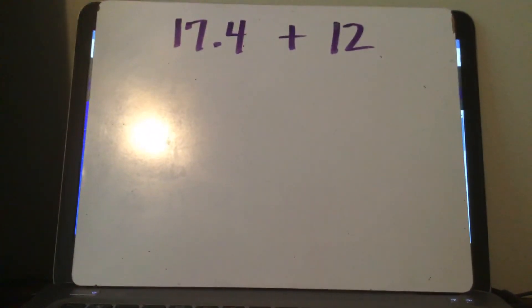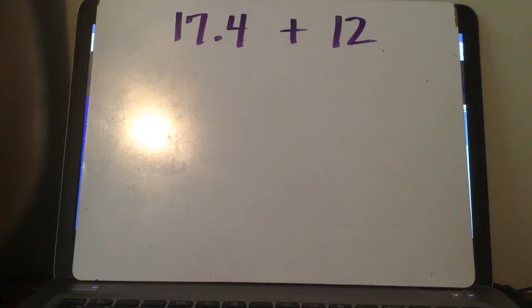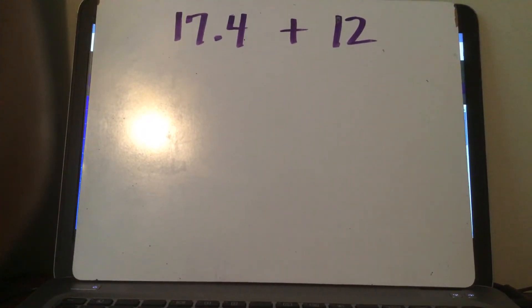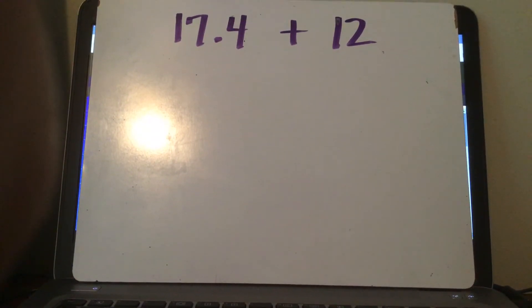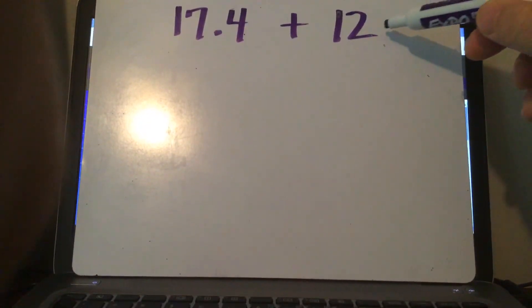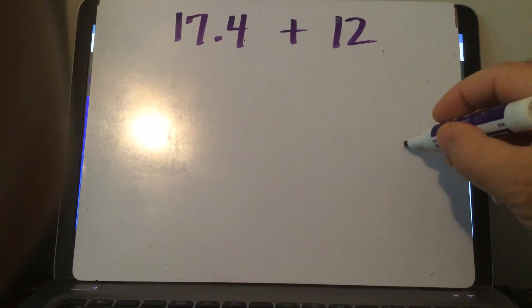Now look at that: I got 17 and 4 tenths plus 12. Now I know you think, where's the decimal, Mr. Allen? Where's the decimal, sir? Well, the decimal is there. But when you write a whole number, if there is nothing after it, you don't have to put the decimal.